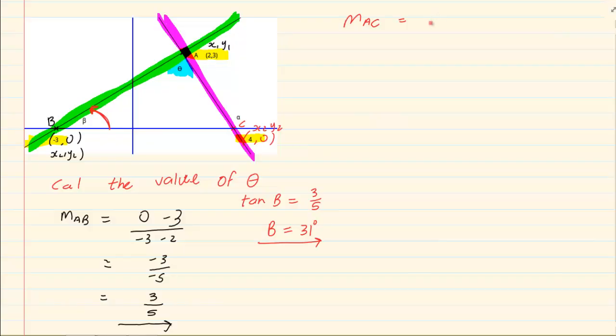So our gradient is y2 minus y1 over x2 minus x1. Remember you're doing gradient by simply looking at these points and substituting. Now that gives us a gradient of minus 3 over 2.